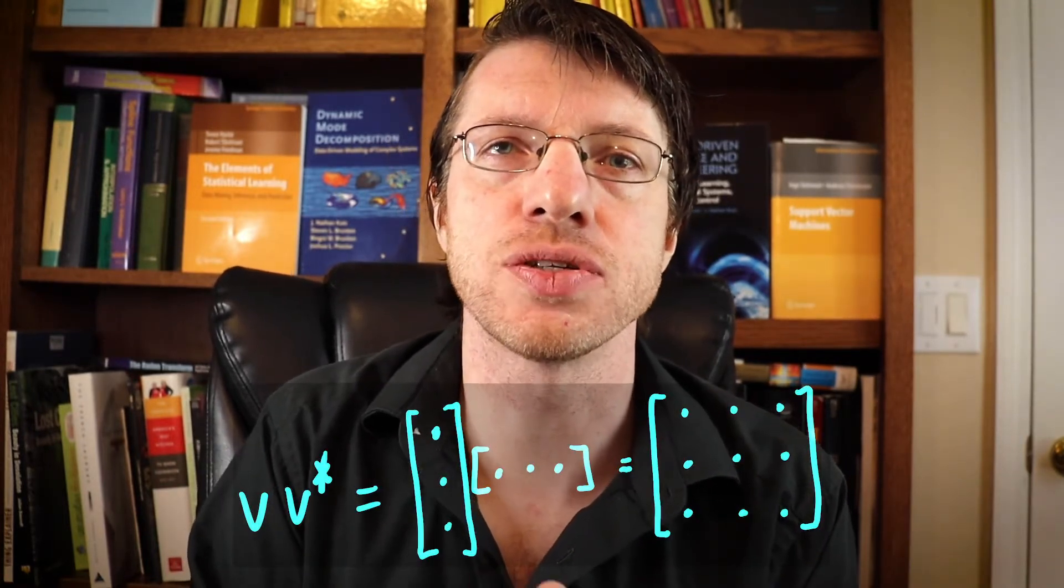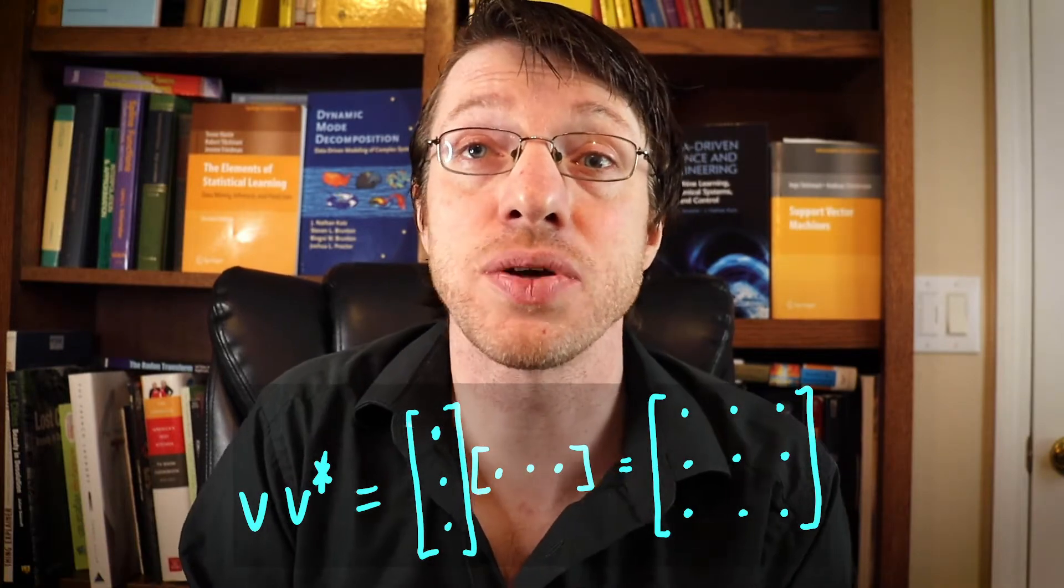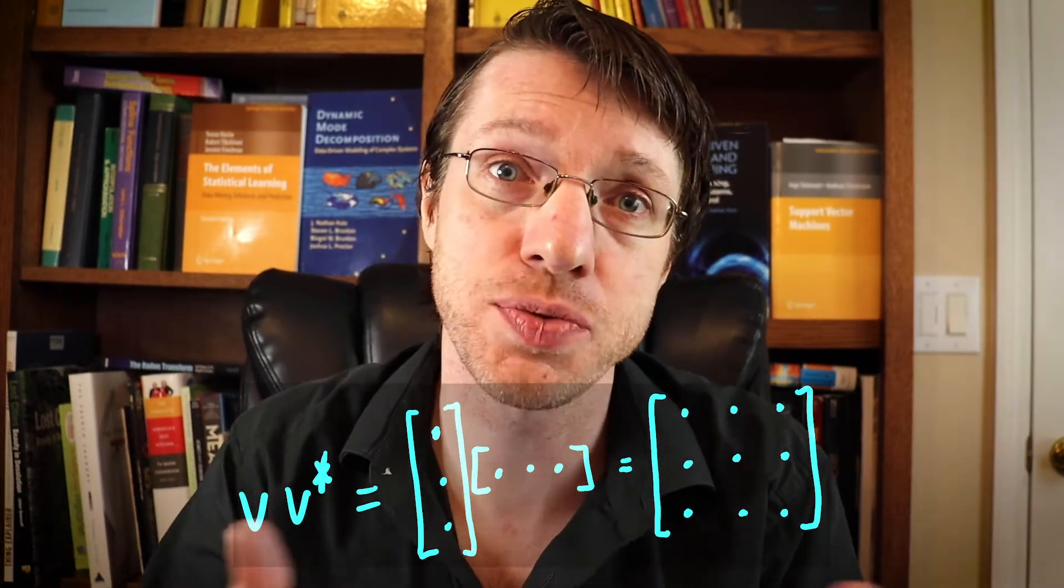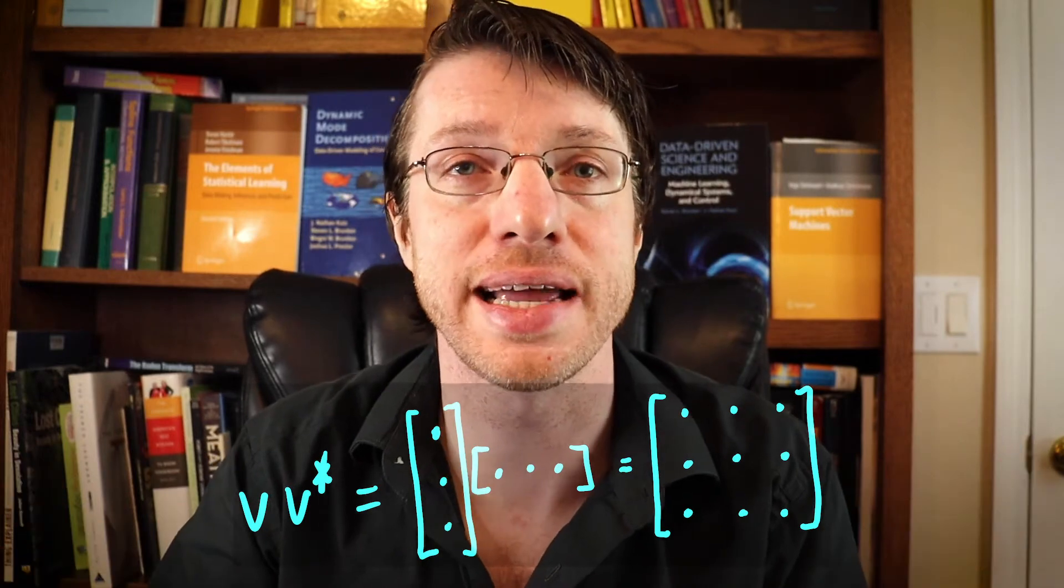So for an eigendecomposition, one thing that it tells you is that there's a special collection of vectors and we already call these eigenvectors. Now we can use these eigenvectors to build what we call rank one tensors. And so that's basically a matrix that has only rank one. And in order to get these rank one matrices, all you need are the eigenvectors.